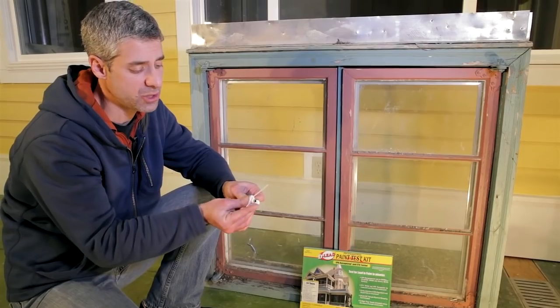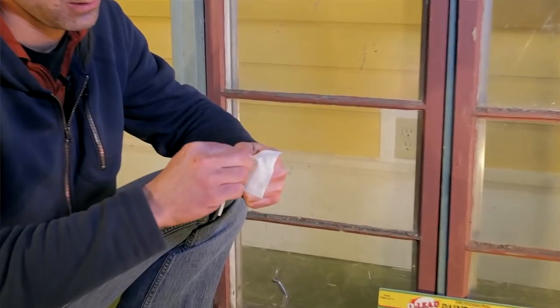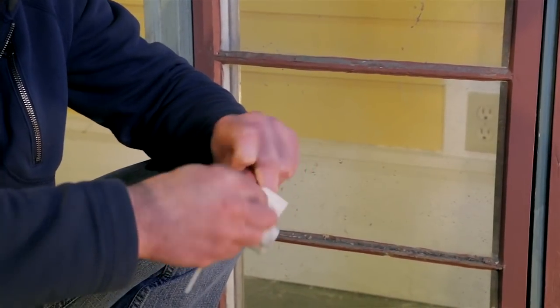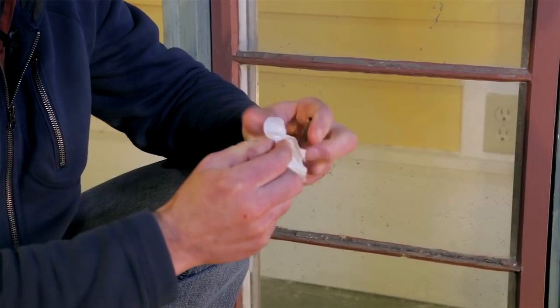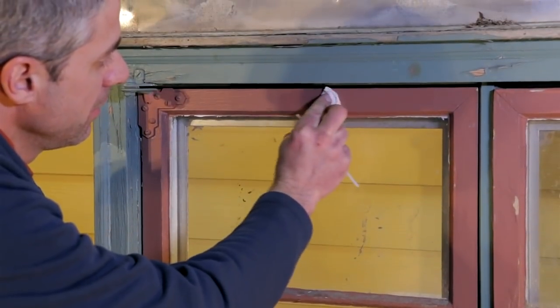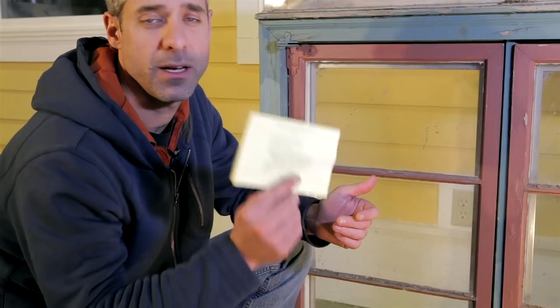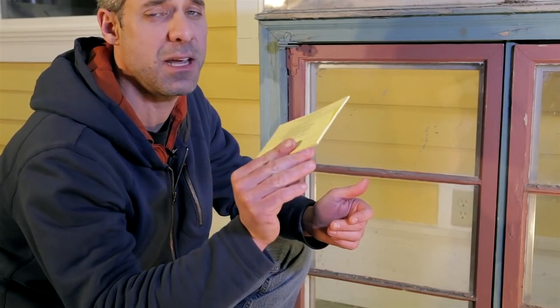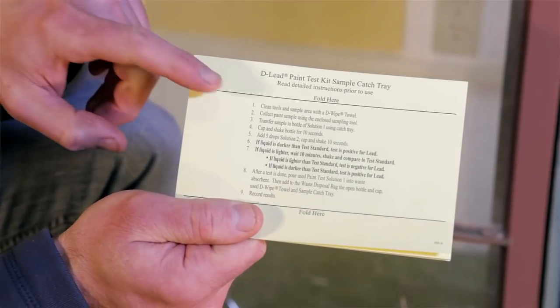Let's take a sample. First step with any of these tests is to clean the tools, just inside and out here, and clean the surface that we're going to test. We then can set up a catchment tray, and the nice thing about these is that they have the directions right on there.